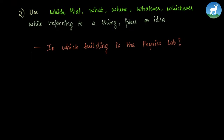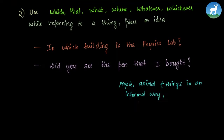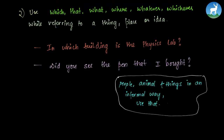Hence we use which, because we're referring to a place. 'Did you see the pen that I bought?' — we're referring to a pen, that's a thing, so we use that. Note that whenever we talk about people, animals, and things in an informal way, we use that — not only for things, places or ideas, but also for people and animals informally.